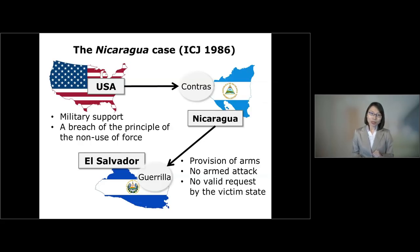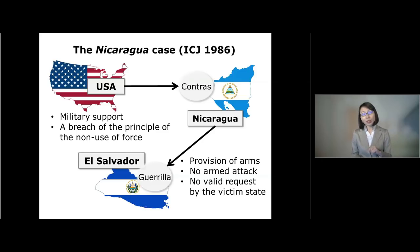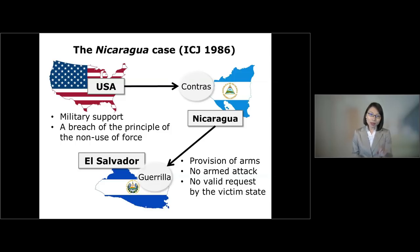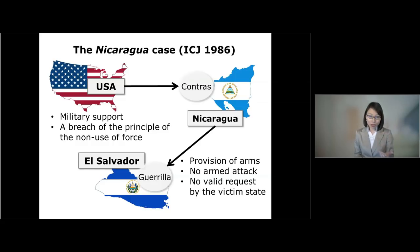The ICJ also said there had to be a valid request from the victim state in order to invoke collective self-defense. In this case, there was no valid request from El Salvador before the US government started providing arms to the Contras. The Nicaragua case is important not only to understand collective self-defense, but also to understand the very high threshold set by the ICJ in determining what constitutes an armed attack.